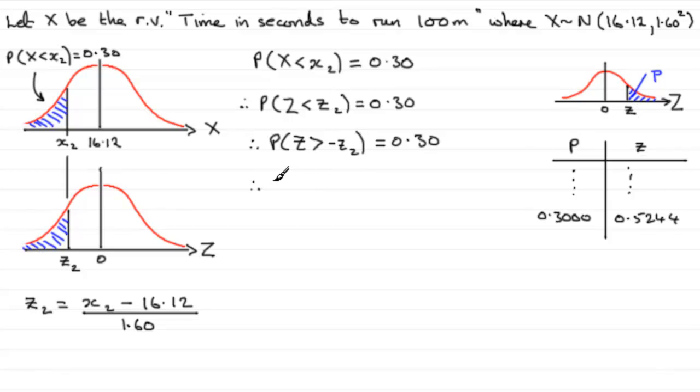So we can say that therefore from tables, what we've got is minus Z2 equals 0.5244. And that means that therefore Z2 will be the negative number minus 0.5244.